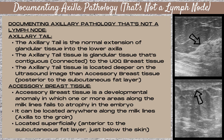During weeks six to eight of development, most of the bilateral mammary ridges atrophy except in the pectoral region of the chest, which is the future site of the breast buds. Think of the mammary lines as two imaginary lines extending from the axilla to the groin in both males and females. Extra areas of glandular breast tissue known as accessory breast tissue can occur anywhere along the milk lines where the tissue fails to atrophy during embryological development.